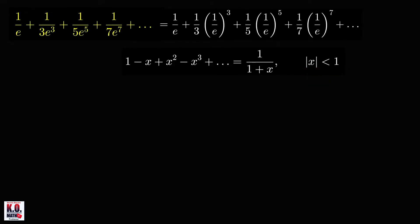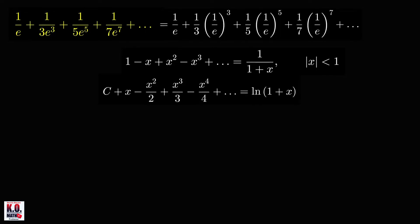Now we can do integration here, term by term, so we can integrate both sides of this equation and we'll get the following. So antiderivative of 1 is x, antiderivative of x is x squared over 2, and so on. And antiderivative of 1 over 1 plus x is ln of absolute value of 1 plus x.